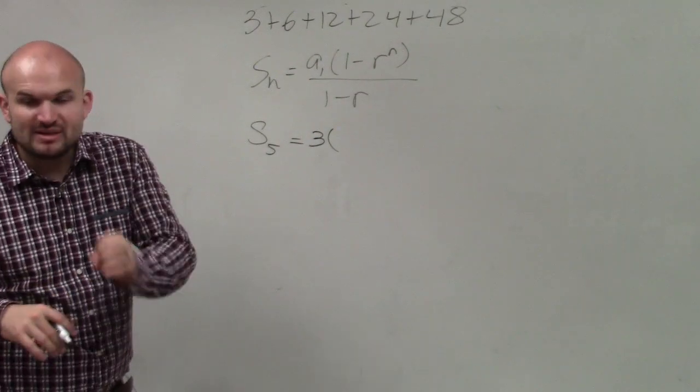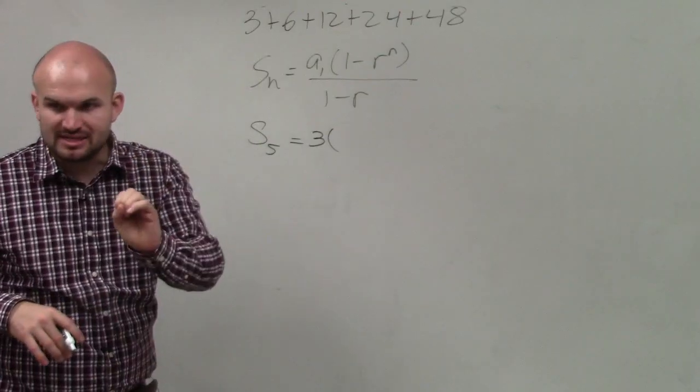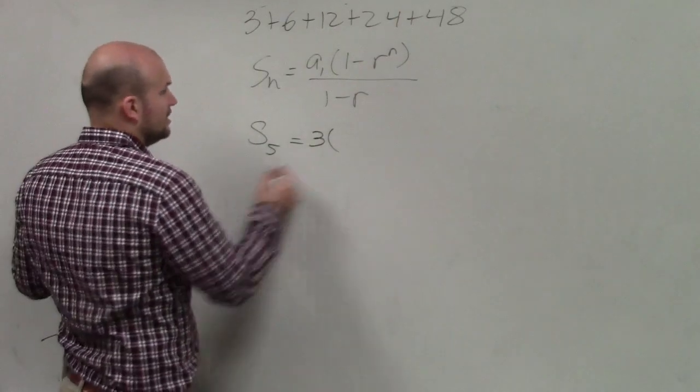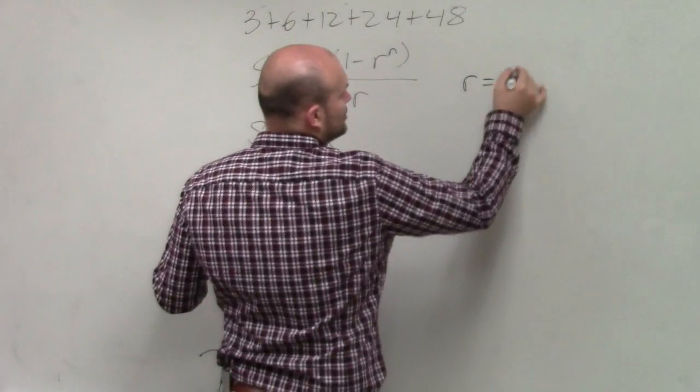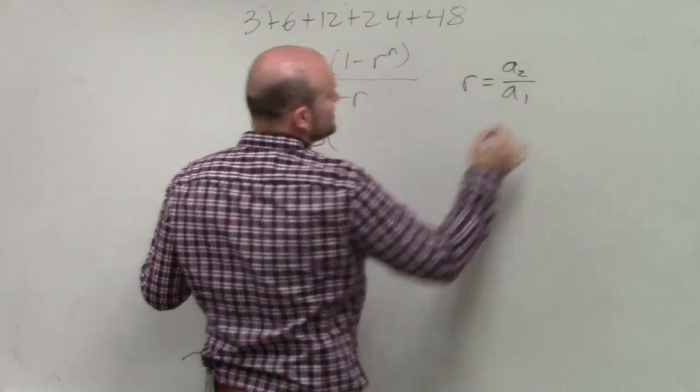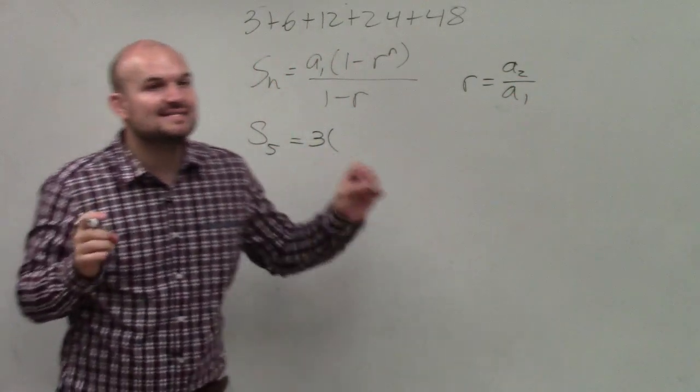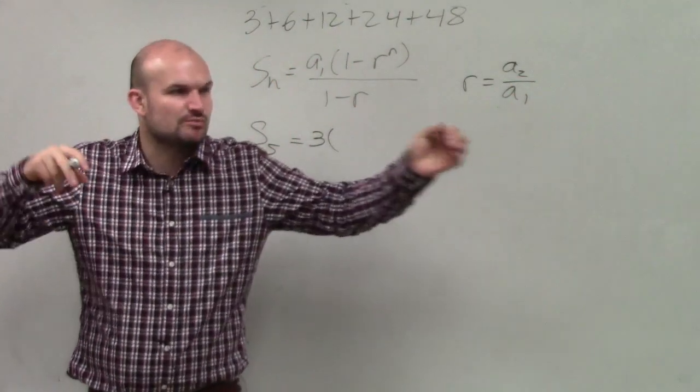r represents the ratio. What we talked about in geometric sequences, to find r, you simply just take r equals a sub 2 divided by a sub 1. For arithmetic sequences, you're finding the common difference where you're subtracting.